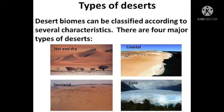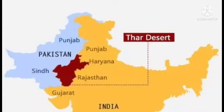Now we are going to discuss Indian deserts. In our India, there are 14 deserts. The largest desert in India is the Thar desert. We can also call it the Great Indian Desert. So, what is the another name of the Thar desert? Yes — the Great Indian Desert.